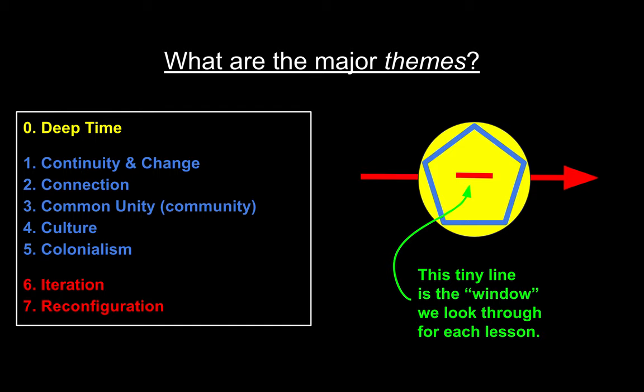Everything we're going to be studying this year can be represented by the symbol you see on the right — the yellow, the blue, and the red. The deep time of the yellow circle contains continuity, change, connection, common unity, culture, and colonialism, and driving everything forward is iteration and reconfiguration. Today, the tiny little red line in the center of this image — we're going to be looking through the lens of the universe itself.